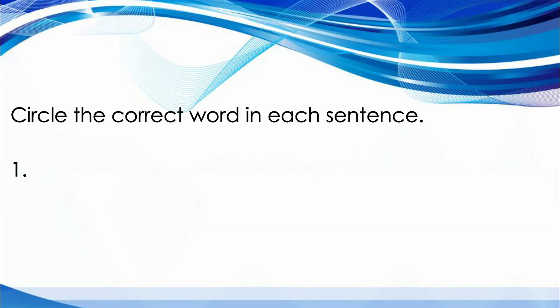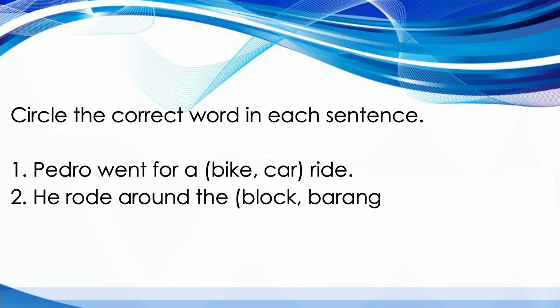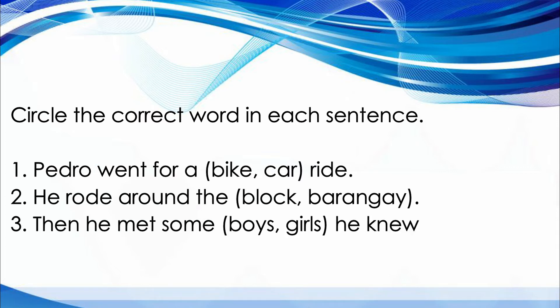Circle the correct word in each sentence. Number 1: Pedro went for a bike or car ride? Number 2: He rode around the block or barangay? Number 3: Then he met some boys or girls he knew from school. What do you think is the correct answer?